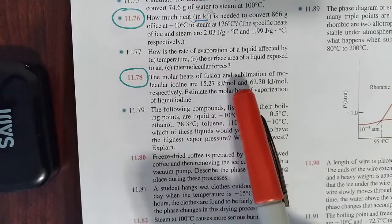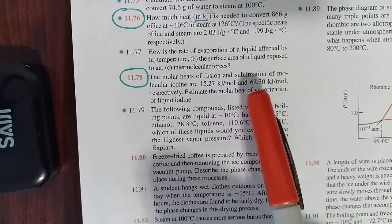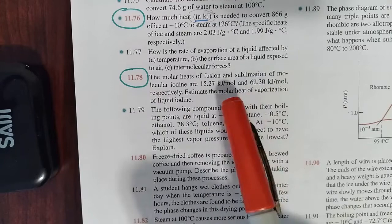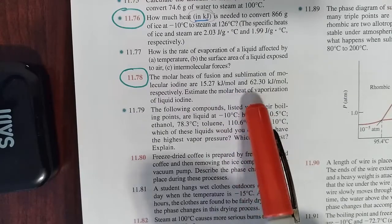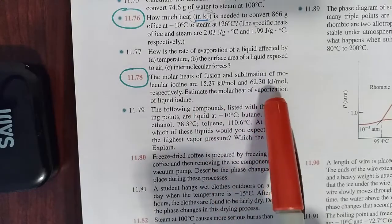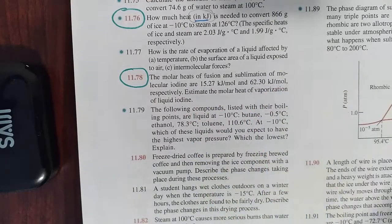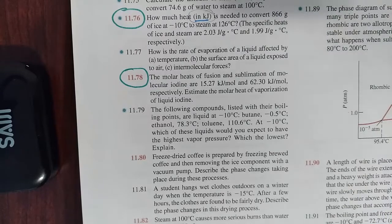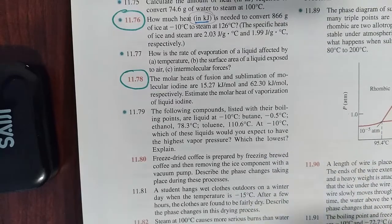and molar heat of sublimation, which is 62.30 kilojoules per mole for iodine. So heat of fusion simply means how much energy is required to melt one mole of a substance. Sublimation means how much energy is required to sublime one mole of a substance. Sublimation is a solid going to a gas.